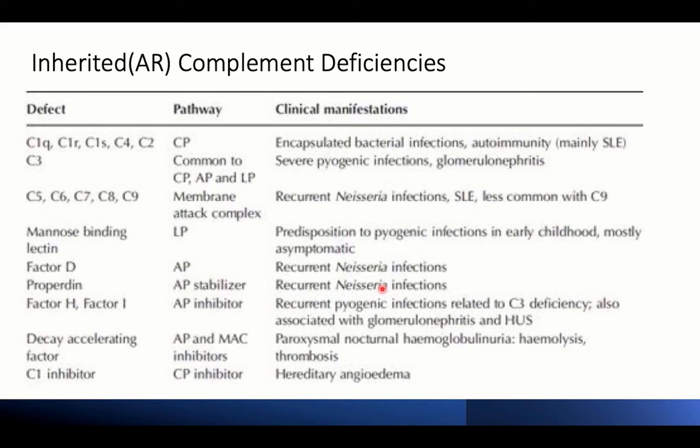Factor H and factor I are down-regulators of the complement system. Their deficiencies can be associated with pyogenic infections. Remember atypical hemolytic uremic syndrome, the genetic form of hemolytic uremic syndrome, and thrombotic thrombocytopenic purpura. Deficiencies of these complement regulators result in continuous activation of the system and recurrent inflammatory conditions.